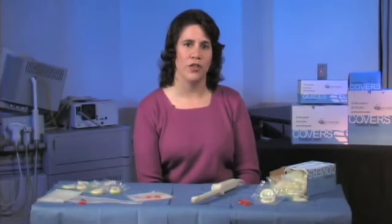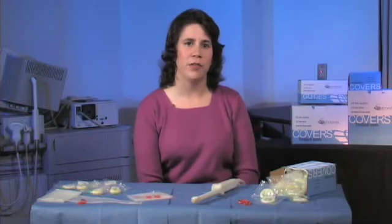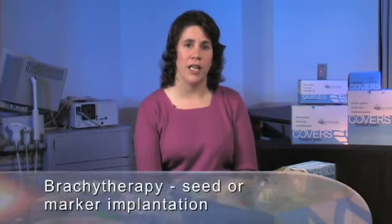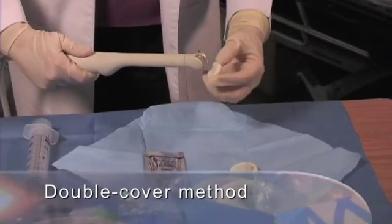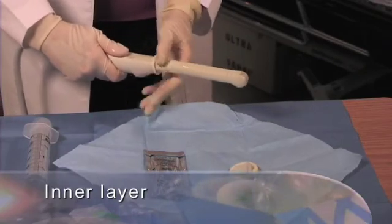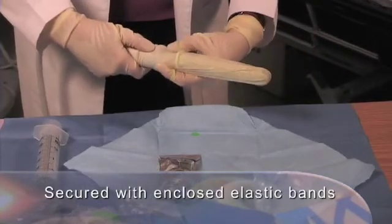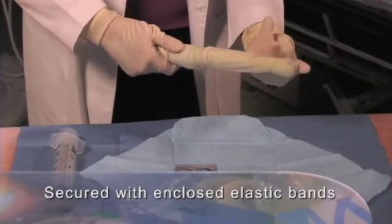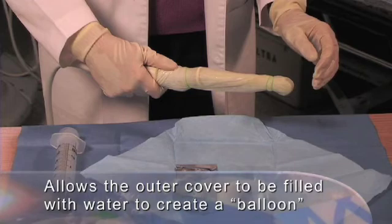When performing a transrectal ultrasound, there are several types of transducer covers available. Transrectal ultrasound is an invasive procedure that may involve tissue biopsy or brachytherapy, seed or marker implantation. Some transducers use a double cover method to create a balloon or water bath through which to scan. This involves placement of one cover that forms the inner layer. This cover must include the gel covering the transducer face. Both the inner and the outer cover are secured to the transducer with enclosed elastic bands. This allows the outer cover to be filled with water to create a balloon that will displace any air between the cover and the wall of the rectum.